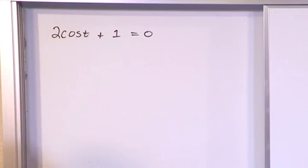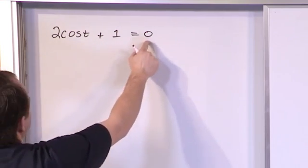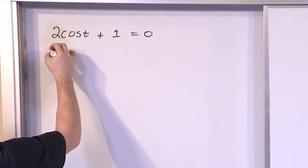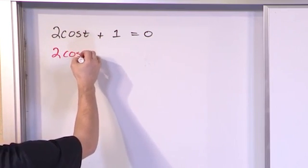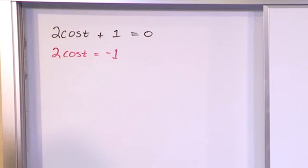But just like any other equation, you take it one step at a time. I want to solve for this angle. So first step, get rid of the negative 1. So I have 2 times cosine of t is equal to negative 1. I just move it to the right hand side.